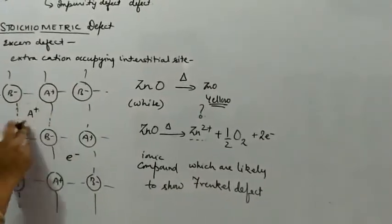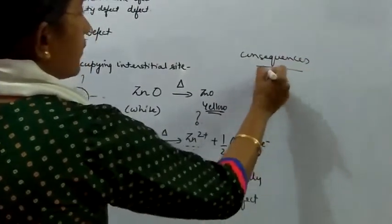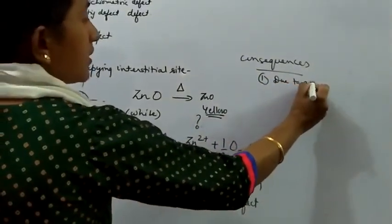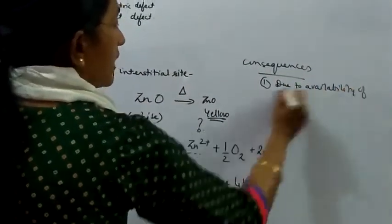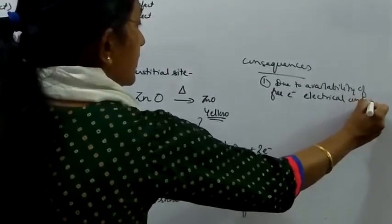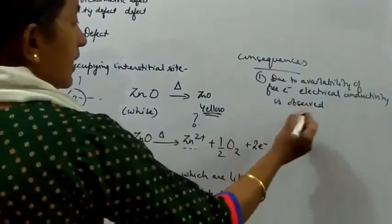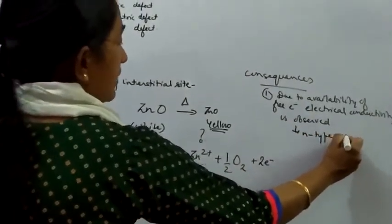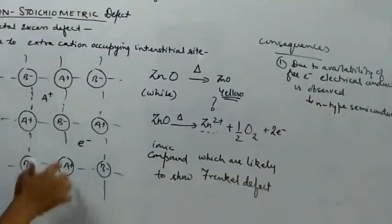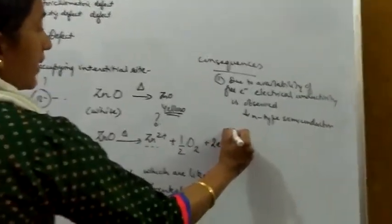Due to this defect, when the extra cation occupies the interstitial site, the consequences are: first, since free electrons are available, electrical conductivity is observed, though it will be less than that of semiconductors. They form N-type semiconductors because the free electron — the negatively charged body — is responsible for the flow of current.